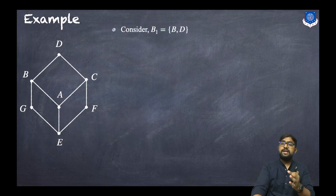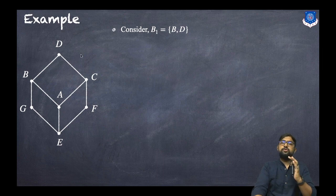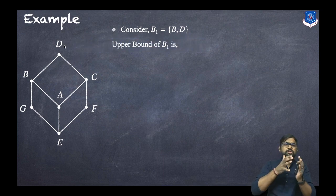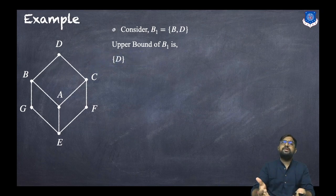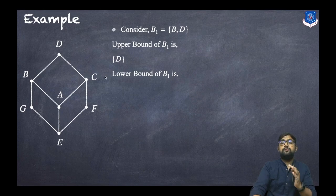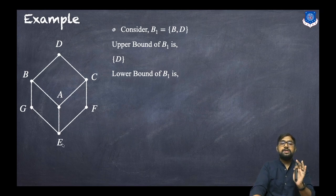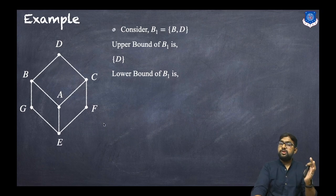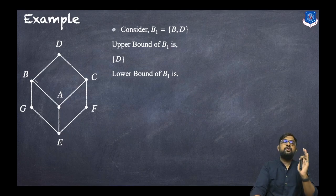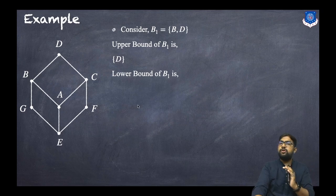Now consider the third Hasse diagram example with set B1 = {B, D}. For upper bounds, D is the only upper point and D itself is the upper bound. For lower bounds, the lower points are E, G, A, and F. Can we go from G to B and G to D? Yes — so G is a lower bound. E is also a lower bound. A is a lower bound since we can go from A to B and A to D. We cannot go from F to B, so F is not a lower bound. B itself is also a lower bound. So A, G, E, and B are the lower bounds.